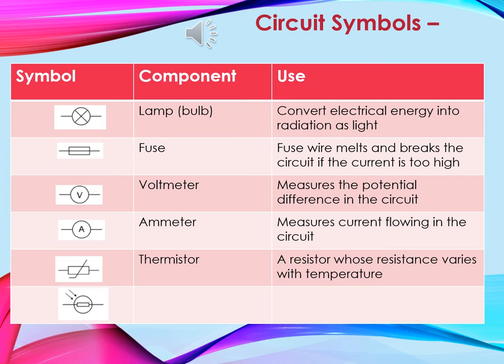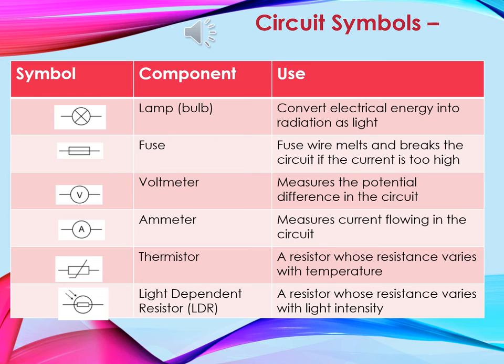This one is a thermistor, which is a resistor whose resistance varies with temperature. And then the last one is a light dependent resistor — a resistor whose resistance varies based on the light intensity, so we call that an LDR. These are all the ones you need to know for your exams, so please take time to revise them and make sure you know the symbol, the component and what it's used for.